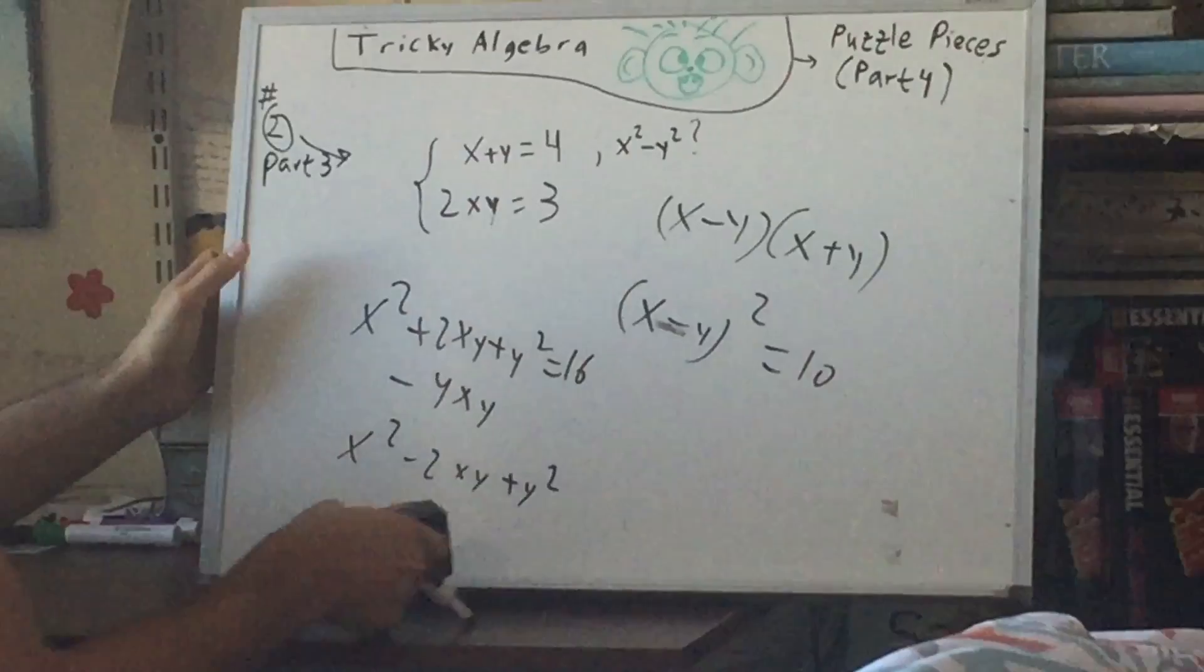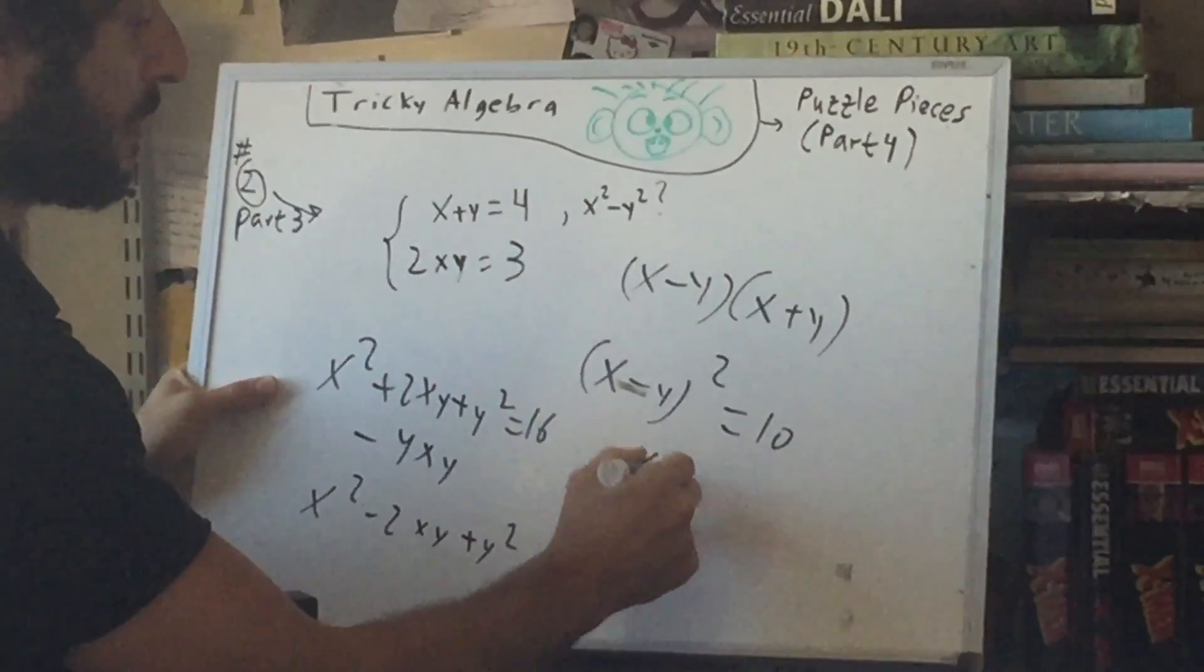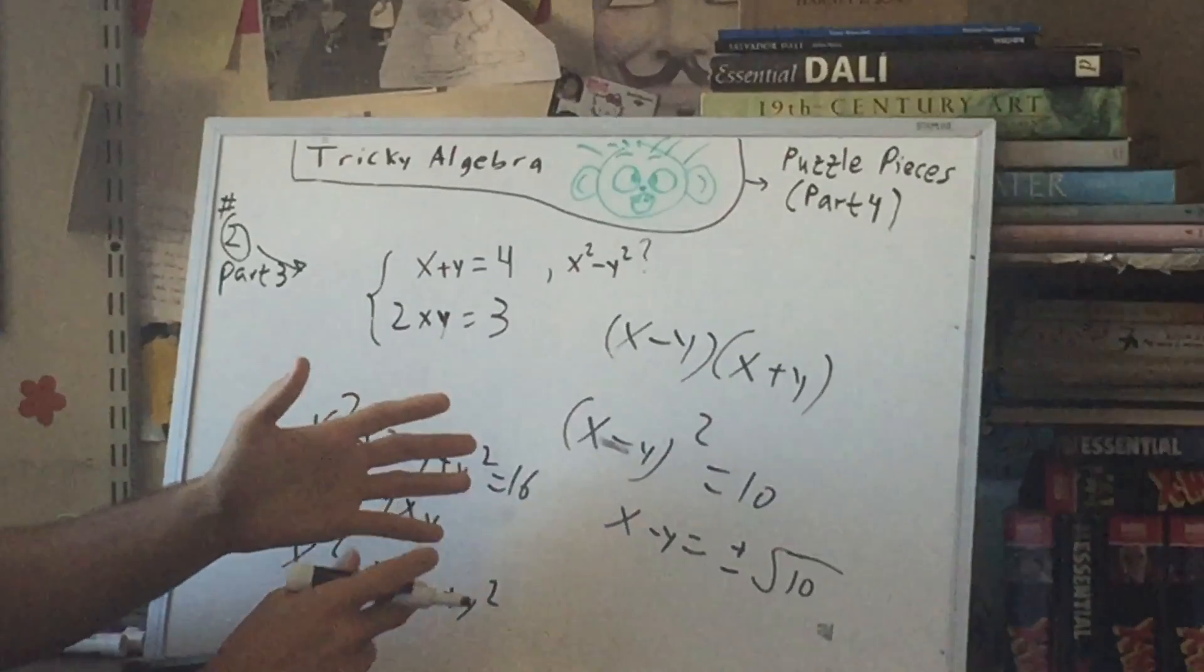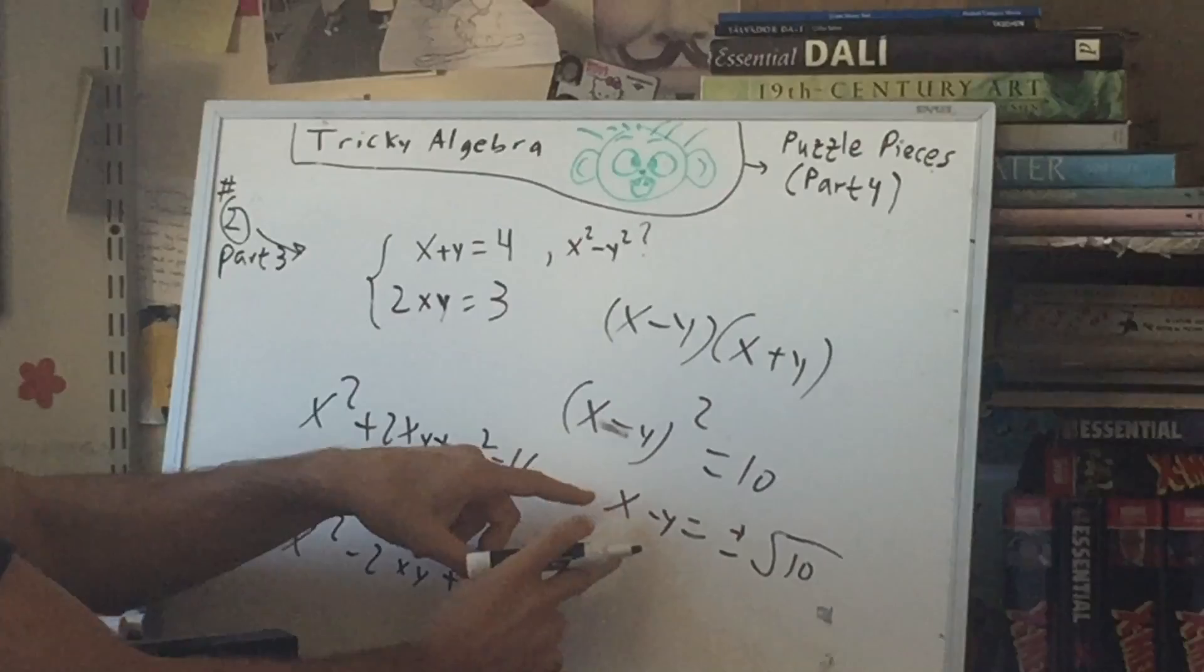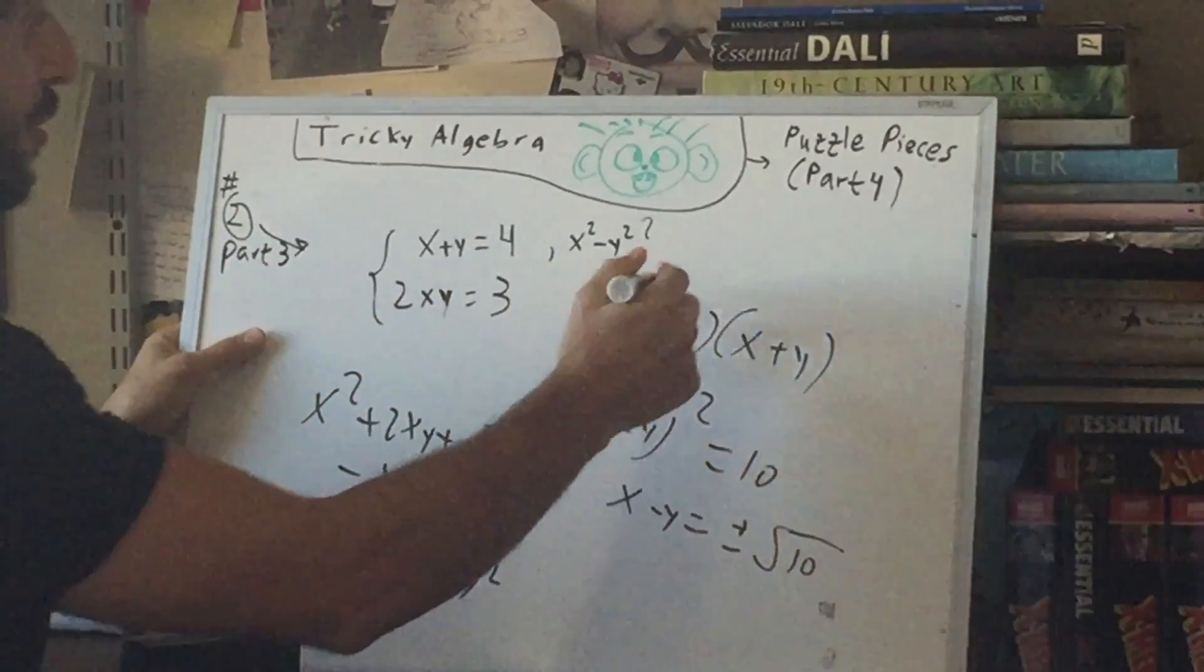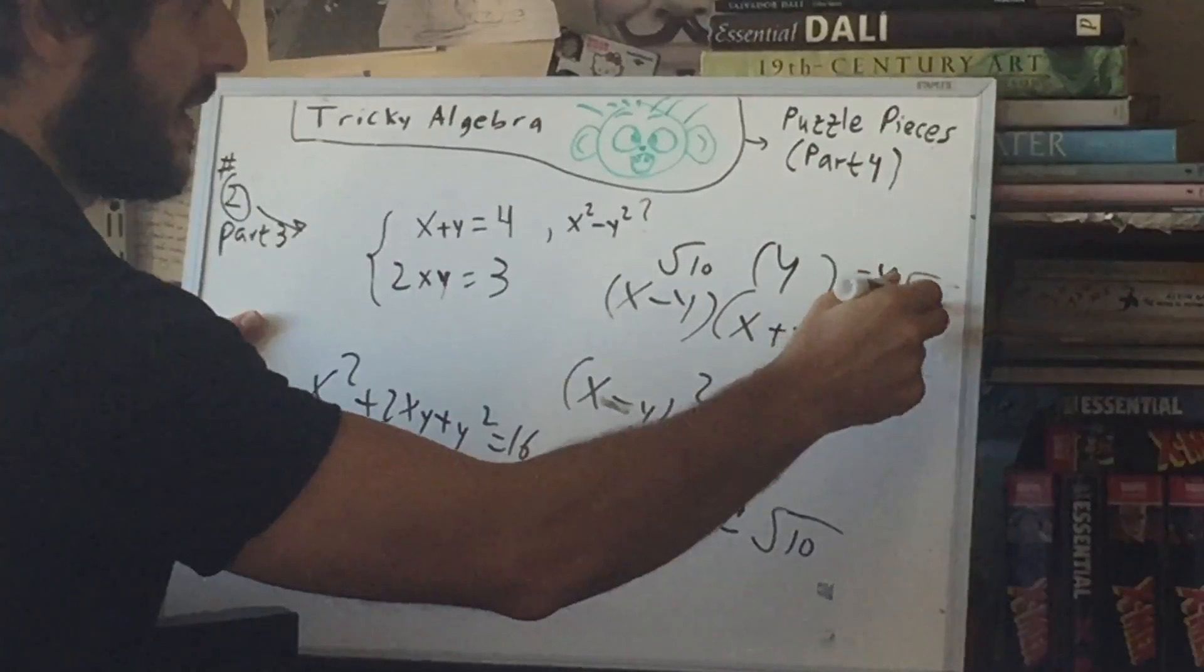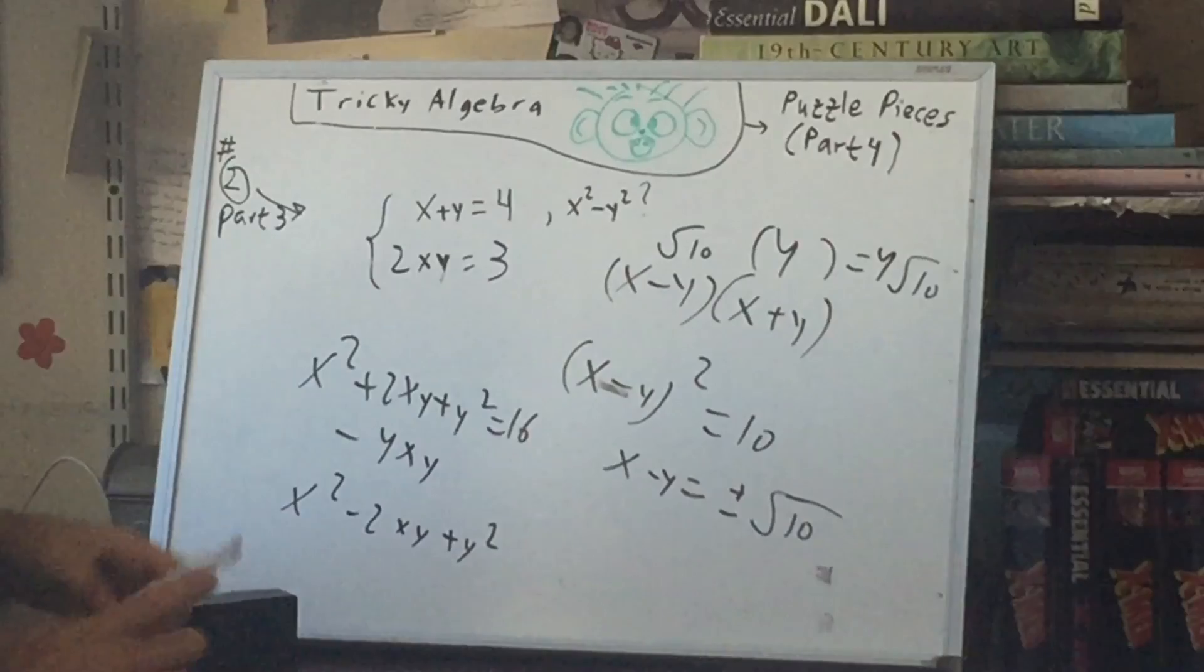Now we're not interested in (x-y)². We just want x - y. So x - y would be plus or minus the square root of 10. Now as I said before there's two possibilities. For example x could be larger than y or y could be larger than x. It doesn't really matter. So let's just pick √10. And so this would be √10 times 4. So your answer is 4√10. If you had picked the negative root 10 then your answer would just be negative 4√10.